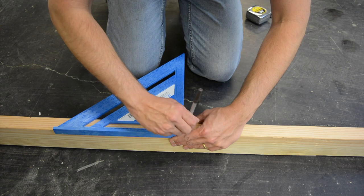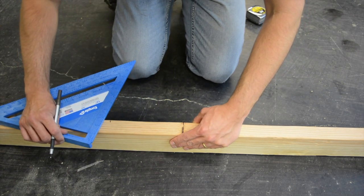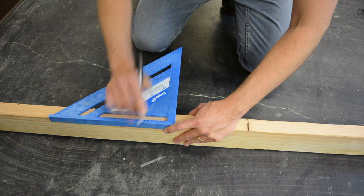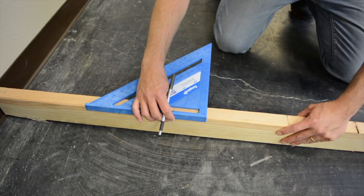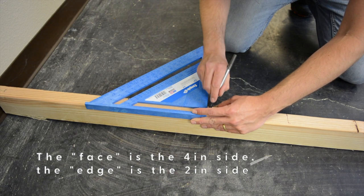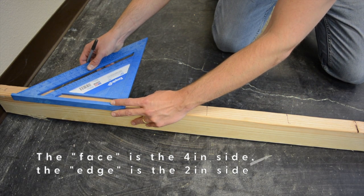Once we've made these marks on each one, we're going to use the speed square to draw a straight line across on these marks. We can use the speed square on the face of the board across the edge and then draw a line on each one of our measurements.